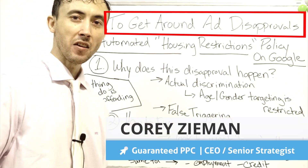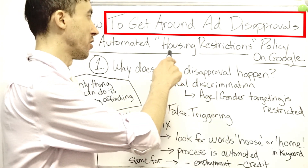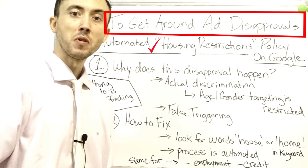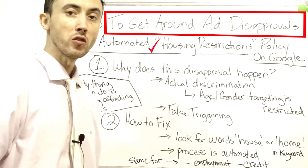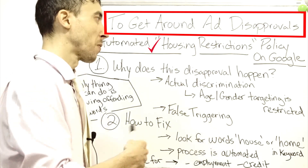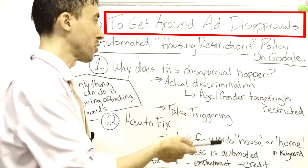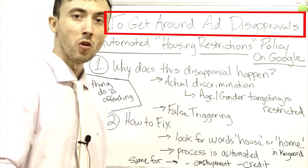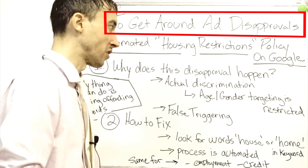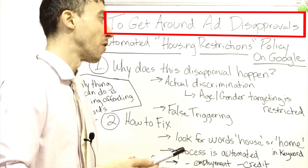This video is about how to get around part of your account being disapproved or unusable due to having an ad policy violation for housing restrictions, which usually shows up in your account in the keyword menu, but can also show up in your ads menu as well via your Google account. There's a lot of false triggering of what gets your ads disapproved on Google lately due to them using more of an automated system, and how you get around that false triggering issue if you fall victim to it.